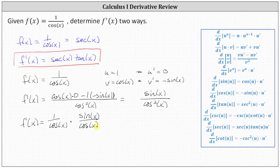And again, using our trig identities, one over cosine x equals secant x, and sine x divided by cosine x is tangent x.